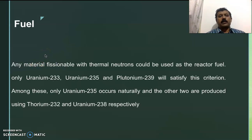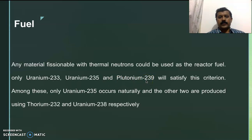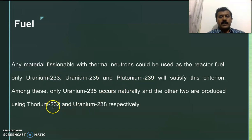Any fissionable material that is fissionable under thermal neutrons could be called a reactor fuel. Only uranium-233, uranium-235, and plutonium-239 satisfy this condition. Among these, only uranium-235 occurs naturally. Uranium-233 and plutonium-239 are obtained from fertile materials — thorium-232 and uranium-238 respectively. The reactor used for conversion of fertile material into fissile material is the breeder reactor.